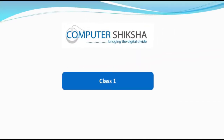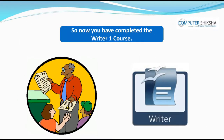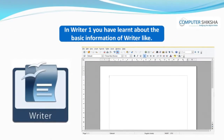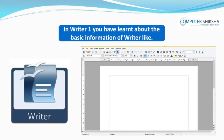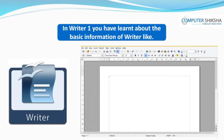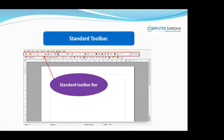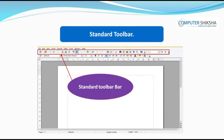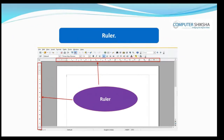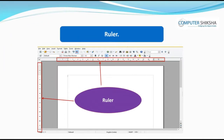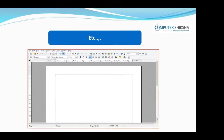Good day to all of you. Now you have completed the Writer 1 course. In Writer 1, you have learned about the basic information of Writer, like the Menu bar, Standard bar, Formatting bar, Ruler, Status bar, etc.